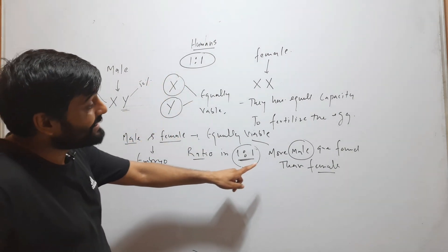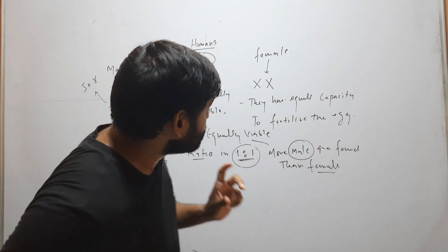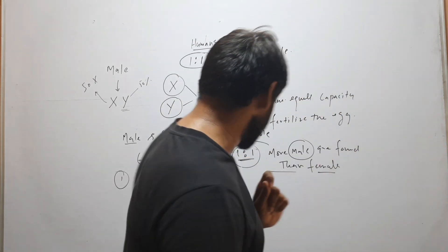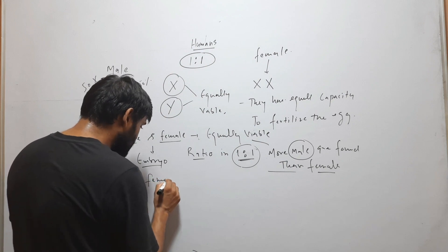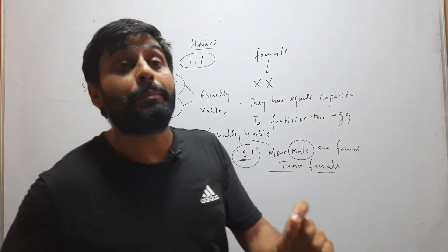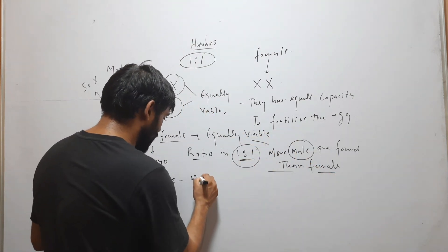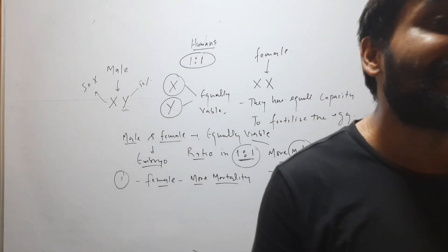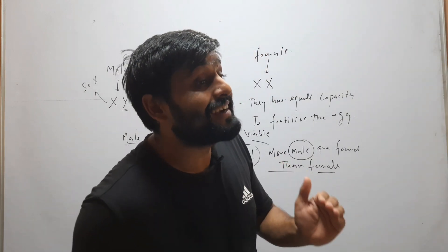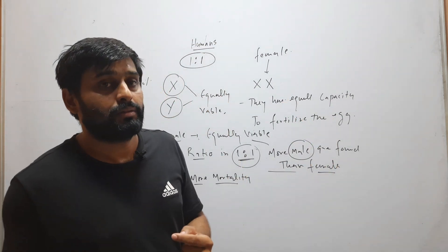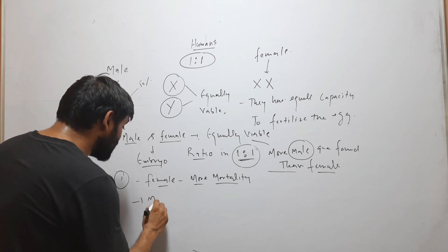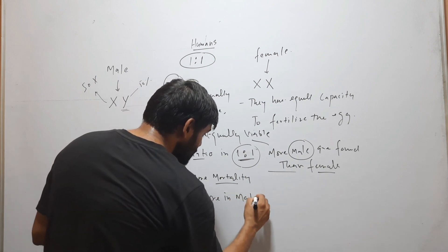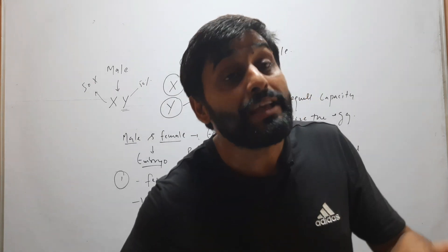From this finding we can draw two conclusions. The first conclusion is that female embryos during embryonic development have more mortality than males. However, after study it was found that mortality is actually more in male embryos, so this first hypothesis is rejected.